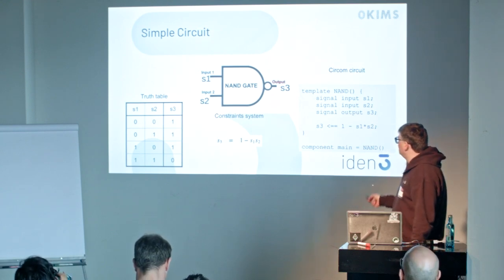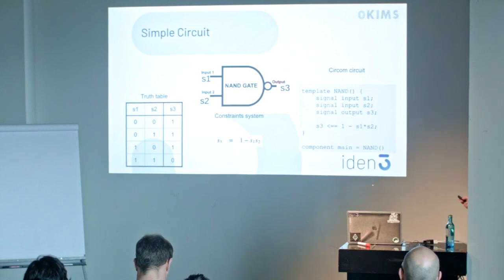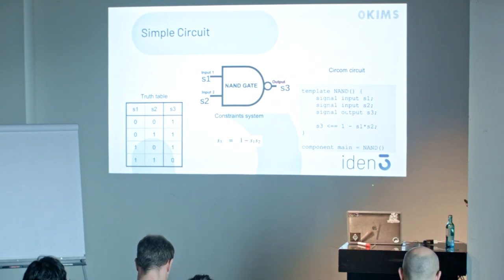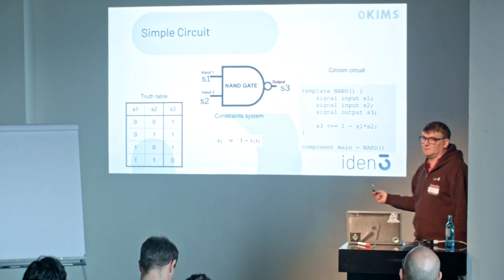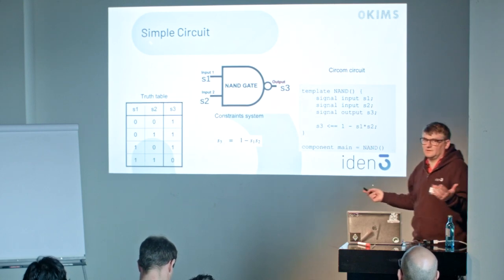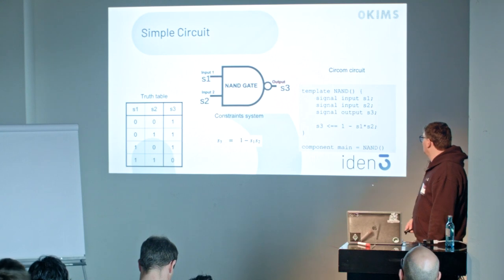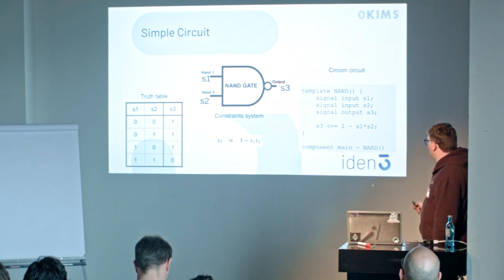How would we write this circuit in CIRCOM? Here we have the simple implementation. We define a template called NAND. We define the signals: S1, S2, and S3. S1 and S2 are inputs, S3 is output, and we assign S3 to 1 minus S1 times S2. This is just a template, and then we instantiate that template. That would be a minimal 'hello world' of a circuit — trivial but it gives you a taste of how you write in CIRCOM.